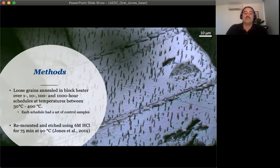After the grains were annealed, they were then remounted and then etched in six molar hydrochloric acid for 75 minutes at 90 degrees Celsius. Here you see an image of implanted and well etched Californium fission tracks in monazite. You'll notice that they're all oriented in the same direction, and this is because of the collimated nature of the ion particles coming from a single point source.